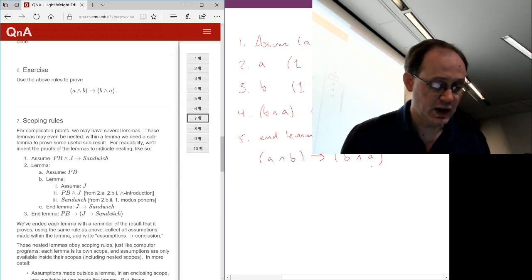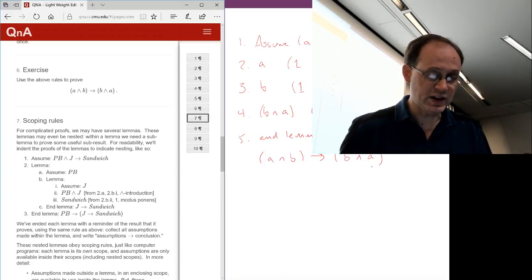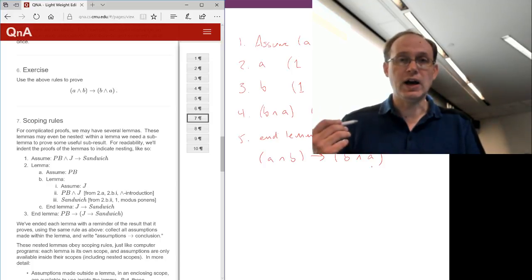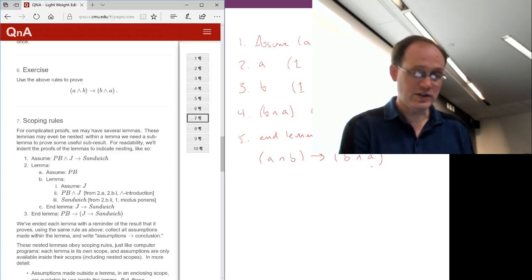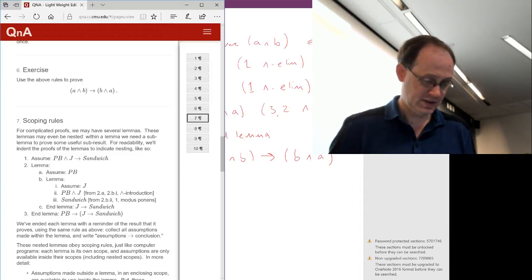And we put the conclusion to the right of the implication. And so that's a very simple example of a proof in propositional logic. And hopefully, it's a good example. Thank you.